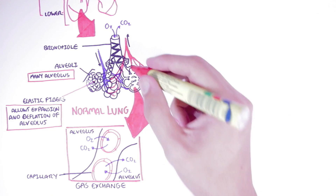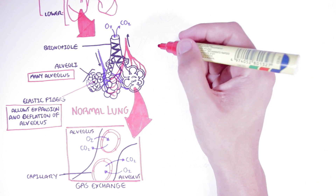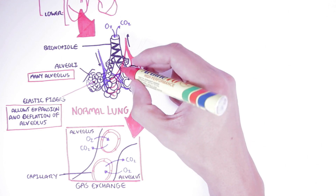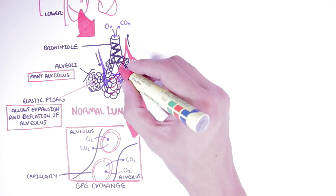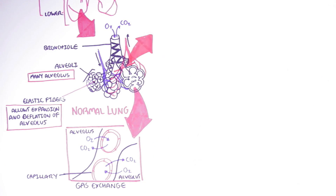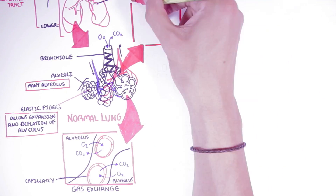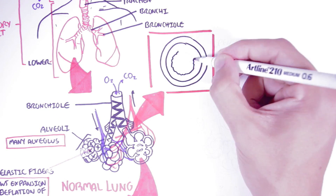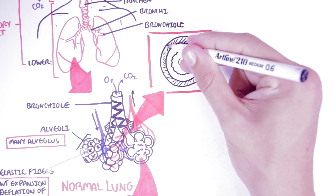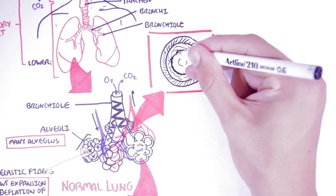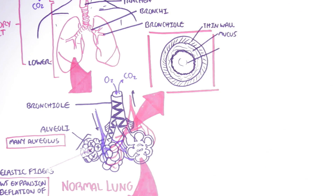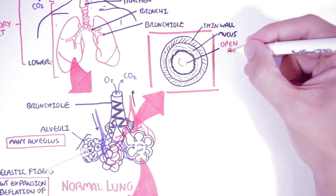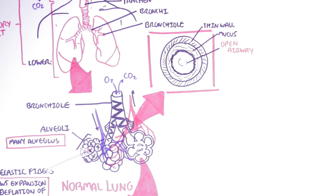If we cut a cross-section of the terminal bronchiole of a normal lung, we can see that it contains a wall, some mucus perhaps, and an open airway — which is very important because this allows gas to flow comfortably through.